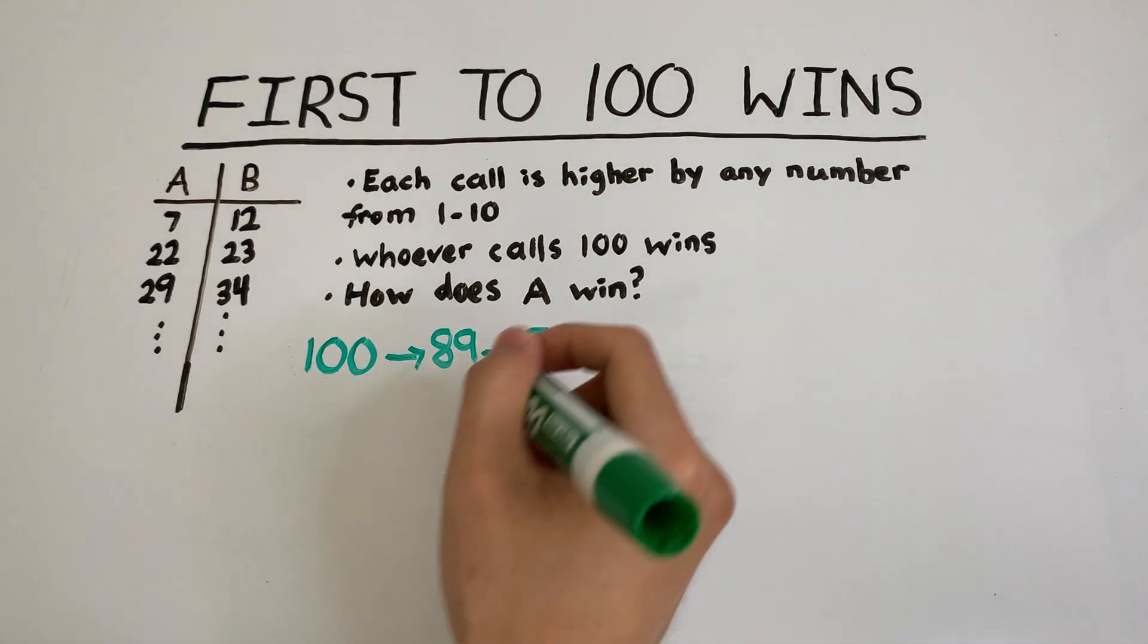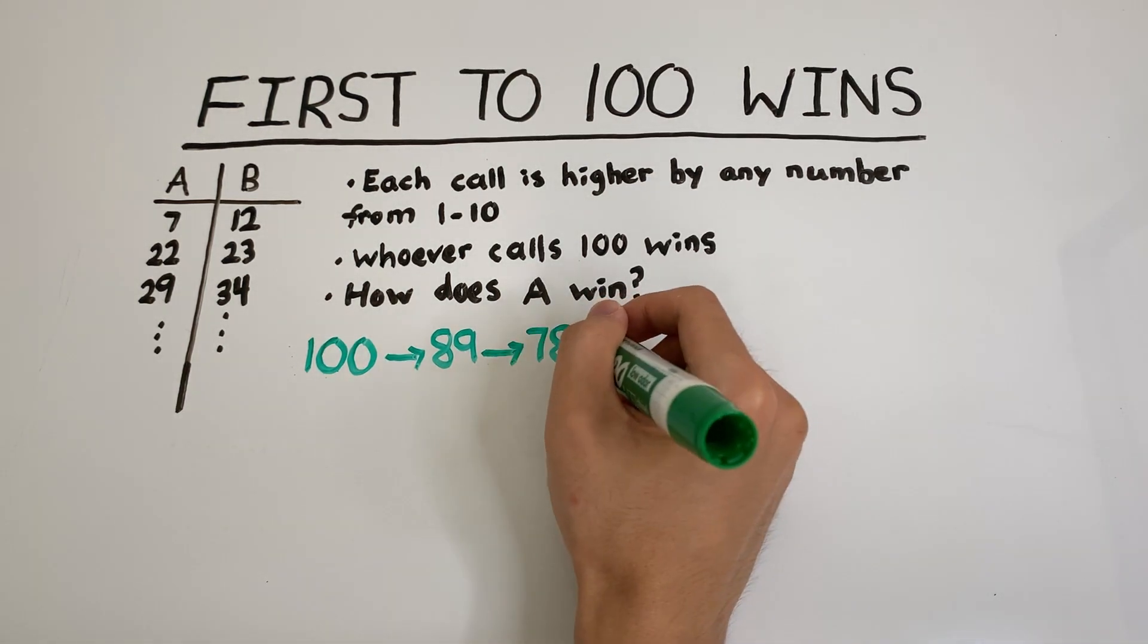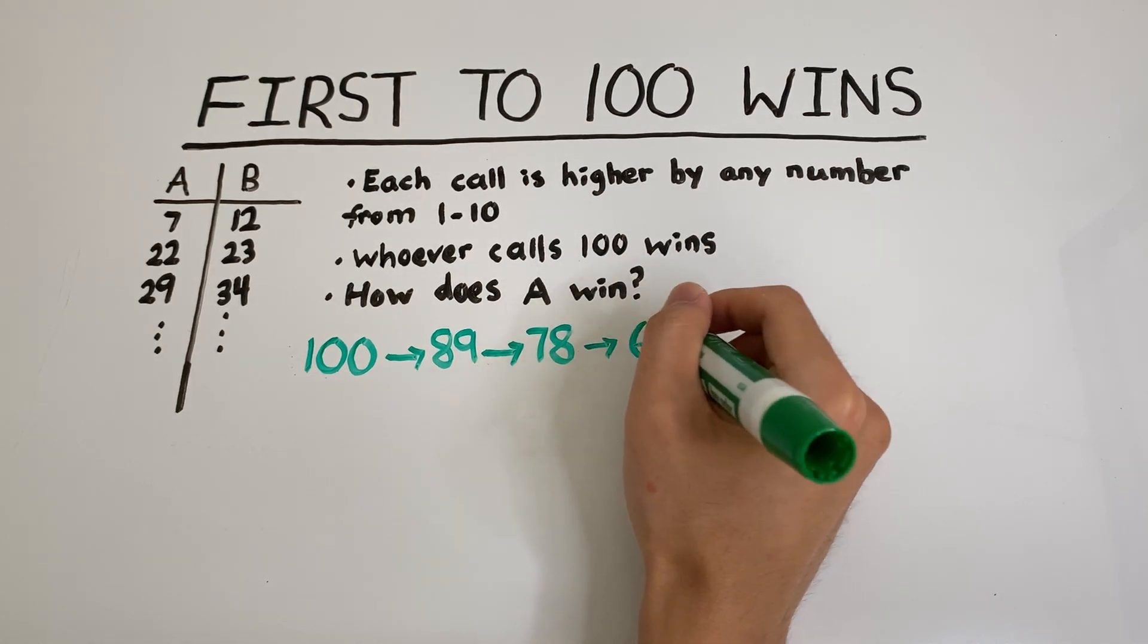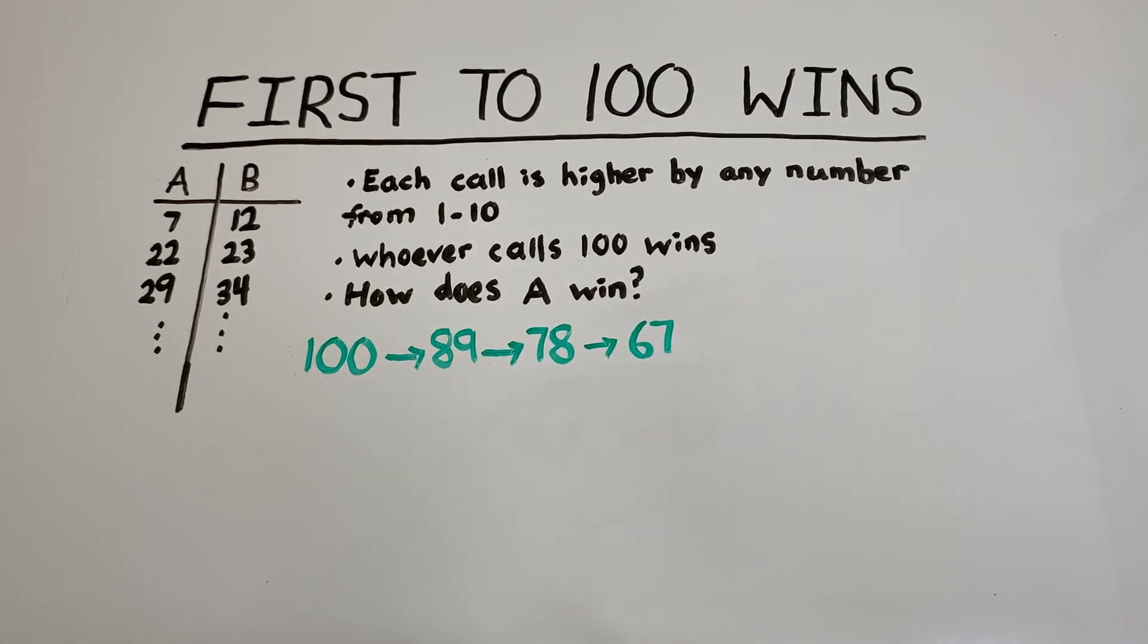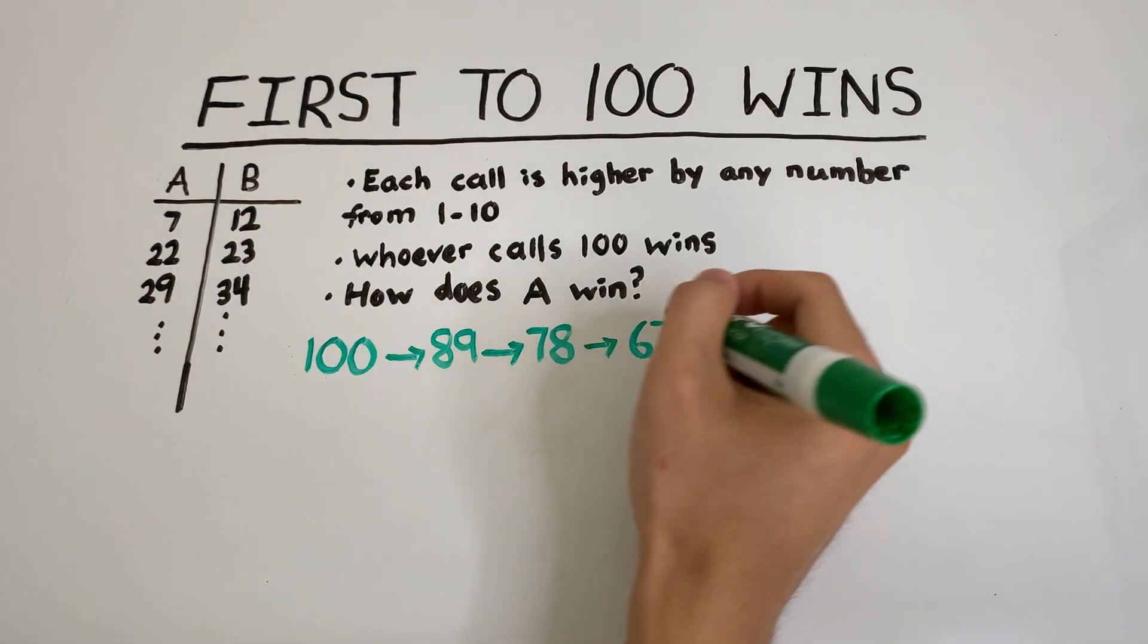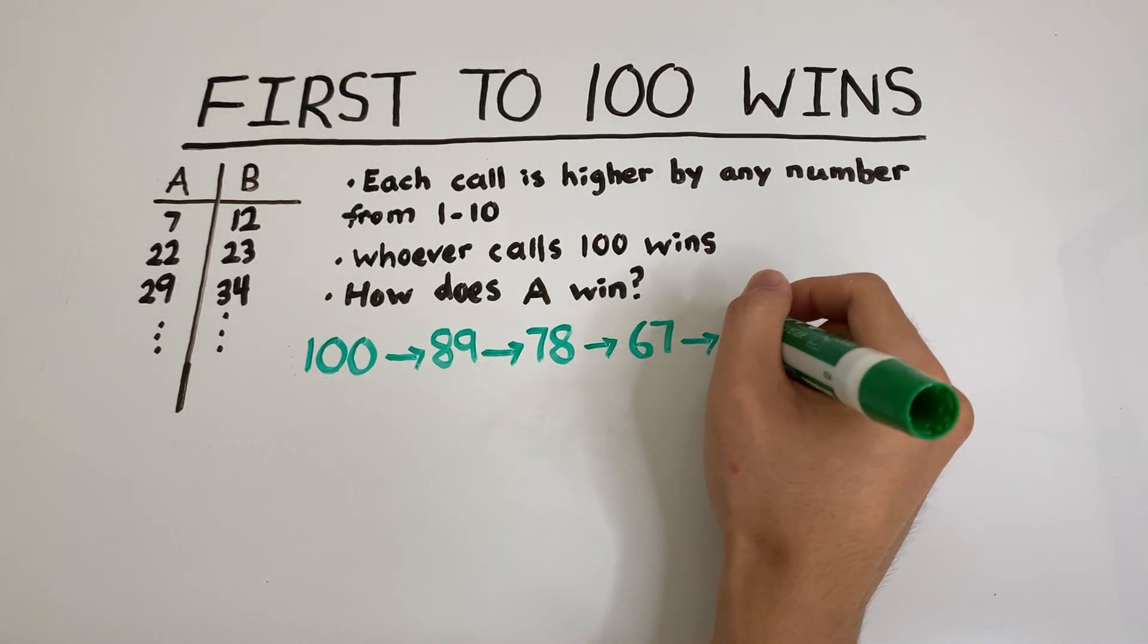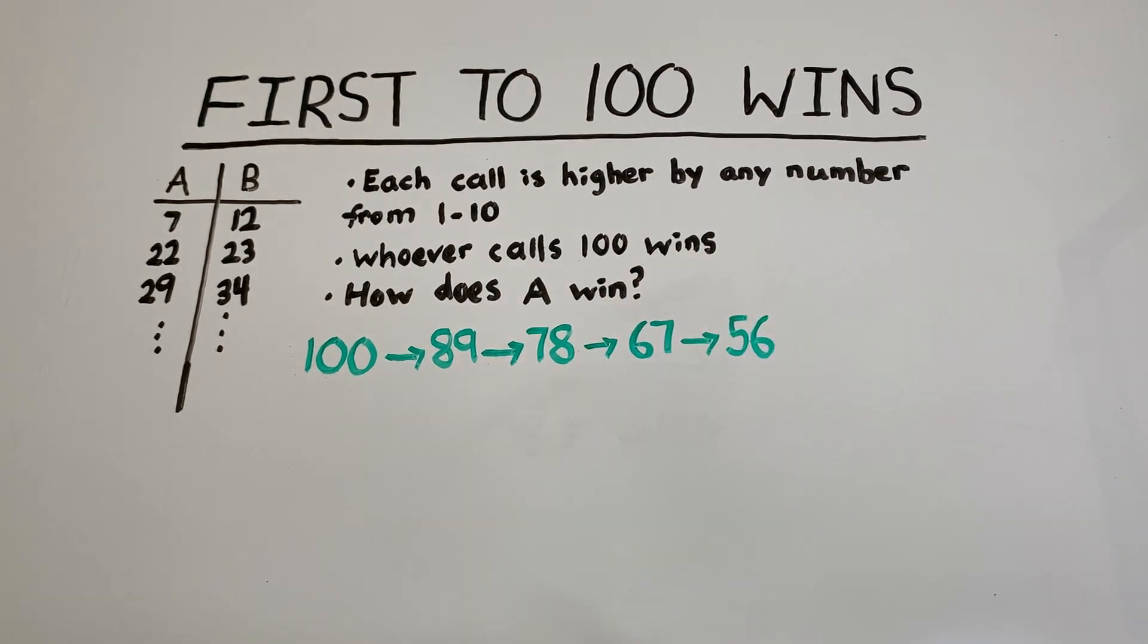And we keep going. For A to say 78, A would have had to have said the number 67, because then at most B can only say 77. To call 67, the previous number would have had to have been 56, because then at most B can call 66.